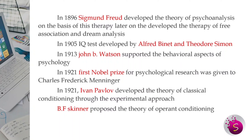In 1921, the first Nobel Prize came from psychological research. The Nobel Prize was awarded to Ivan Pavlov. The theory is called Classical Conditioning Theory, which is an experimental approach.